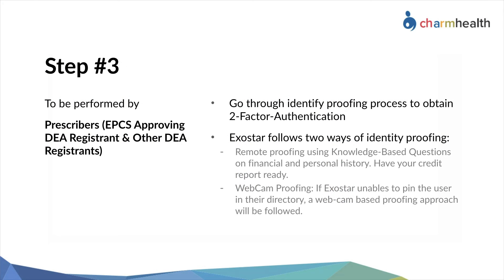The approving DEA Registrant and other prescribers enrolling in EPCS need to go through the ExoStar identity proofing process. ExoStar follows two ways of identity proofing: remote proofing using knowledge-based questions on financial and personal history — having your credit report ready will help in answering the questions quickly — and if ExoStar is unable to find the user in their directory, a webcam-based proofing approach will be followed.